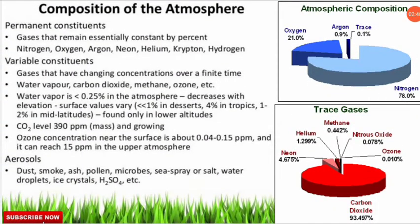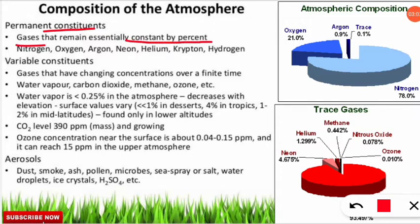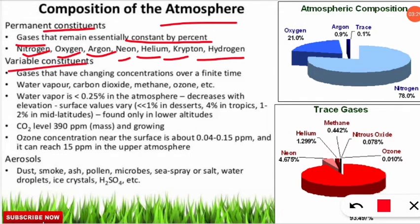Permanent constituents are gases that remain constant by percentage. These include nitrogen, oxygen, argon, neon, helium, krypton, and hydrogen. Variable constituents, by contrast, have changing concentrations over time. These are water vapor, carbon dioxide, methane, ozone, and several other gases. So these four — water vapor, carbon dioxide, methane, and ozone — are the important variable constituents of the atmosphere.